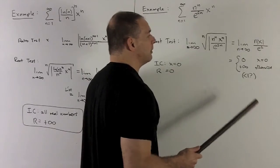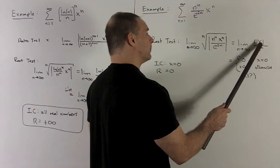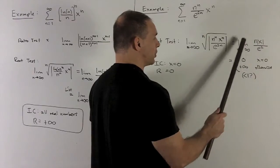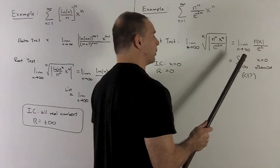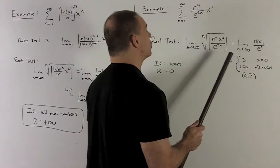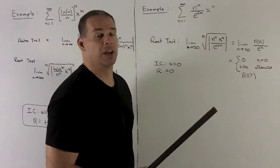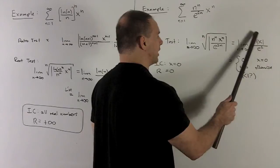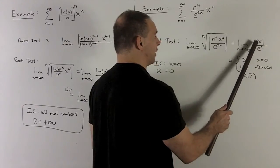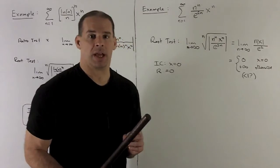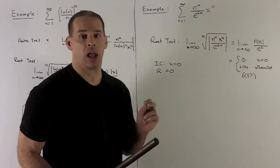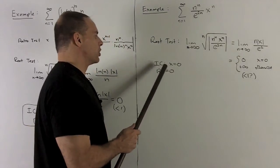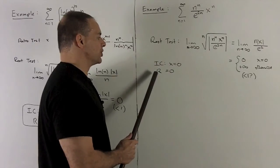Taking the limit as n goes to infinity, two things happen. If x equals 0, the top goes to 0 and we're just taking the limit of 0, which converges — but it won't be interesting since we'd just be taking sums of 0s. If x is non-zero, we can treat x as out in front, and we're just looking at the limit of n as n goes to infinity, which blows up to plus infinity. So this diverges for all x but 0. Our interval of convergence is the single point 0, and our radius of convergence is 0.